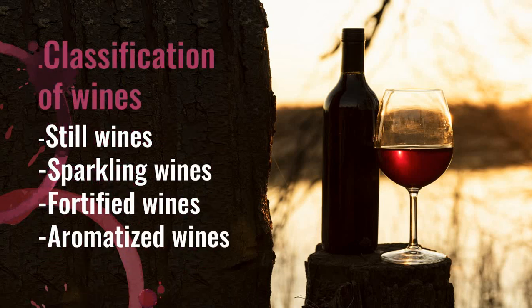Now the classification of wines. We have four classifications of wines — some books say five. The four are: still wines, sparkling wines, fortified wines, and aromatized wines. If an exam asks you to list five classifications, name the four and the fifth one will be bitters. Today we are going to cover the four classifications of wines.